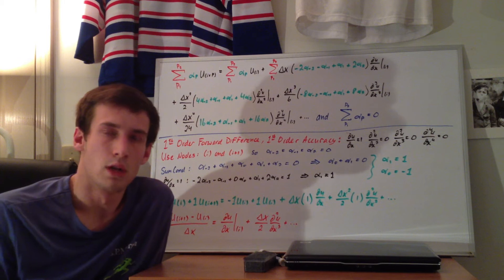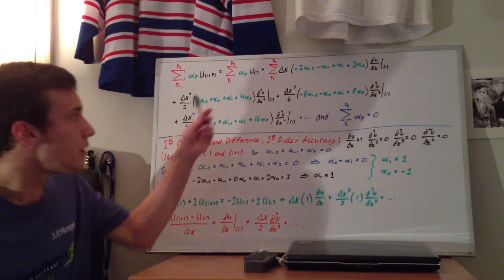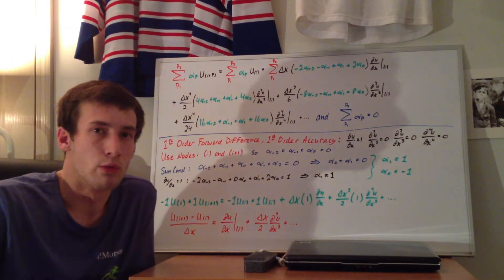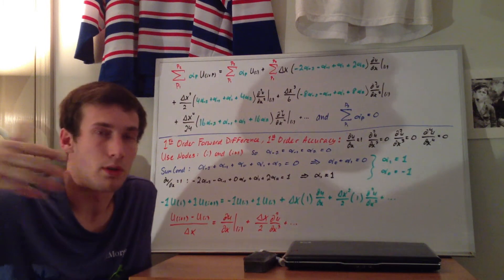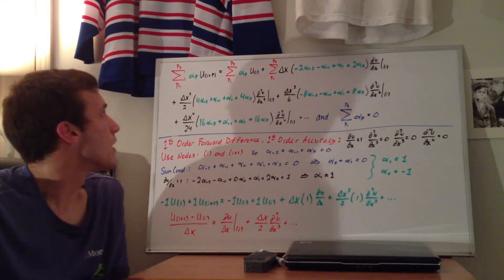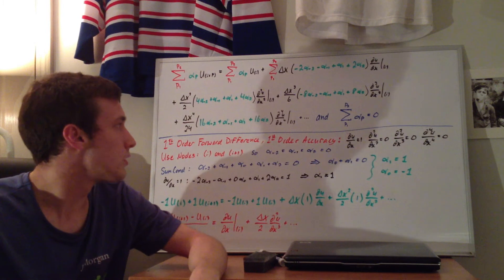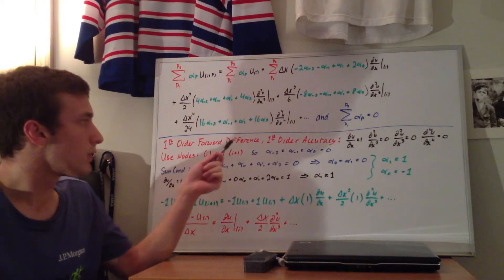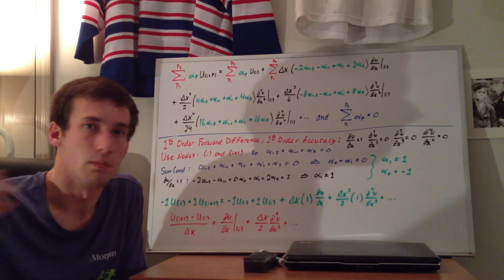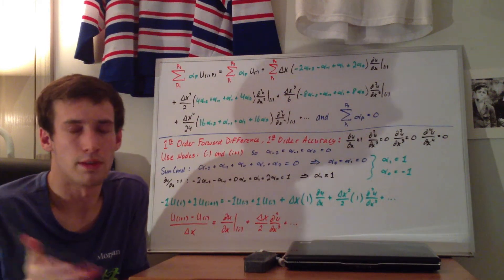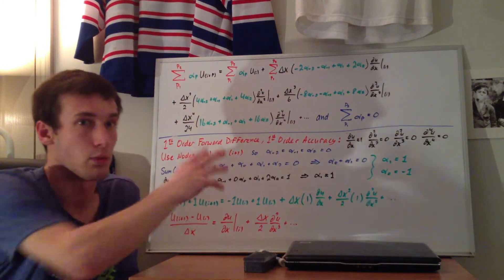So we're looking at the first order derivative, first order accurate, forward finite difference. Up here above the blue line, I rewrote the equation from the bottom of the previous video, which I'll post in the description. You should be familiar with that, and over here is the summation condition I explained previously. I'm going to go over the derivation so we can verify it matches what we got from the direct Taylor series approach — that was the easier way for this case, but this general method becomes much easier for higher order derivatives and more points.